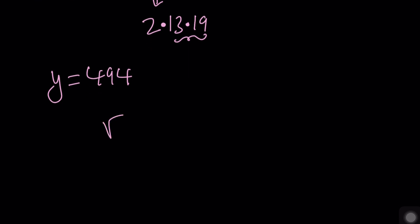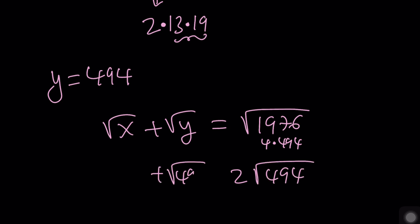First of all notice that this is 4 times 494. Therefore it can be written as 2 times 494. And if y is 494, by subtraction you also find that x is 494. In other words, (494, 494) is a solution.